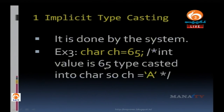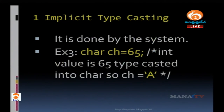Example 3 for implicit type casting: char ch equals 65. Here 65 is stored into variable ch of type character. Since character type can only store characters, 65 is type casted — the ASCII value of 65 is 'A', so 'A' is stored into ch.